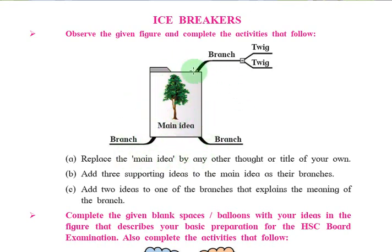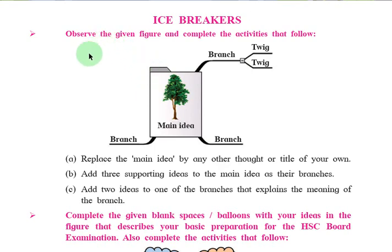For example, I would like to take the concept of water. Suppose we take the main idea as water. As you know, water is one of the important parts of our life - without water we can't live - so there are several concepts regarding water. Here, one branch is the uses of water, another branch is the states of water, another is the source of water, and another branch is the formula of water. Water is H₂O, that means two hydrogen atoms and one oxygen atom.